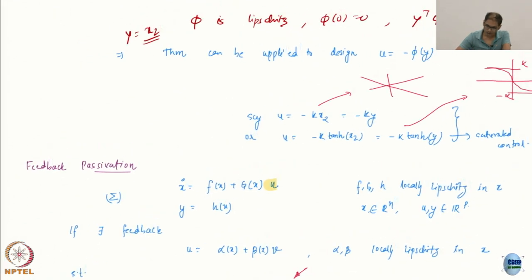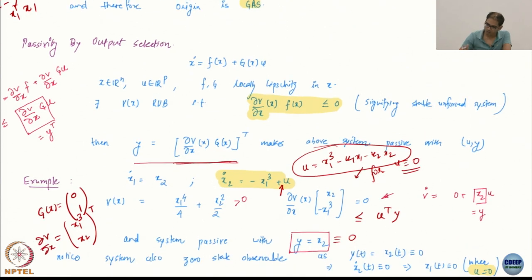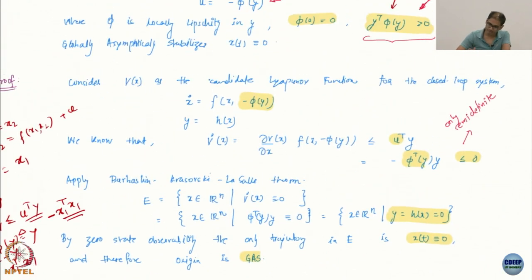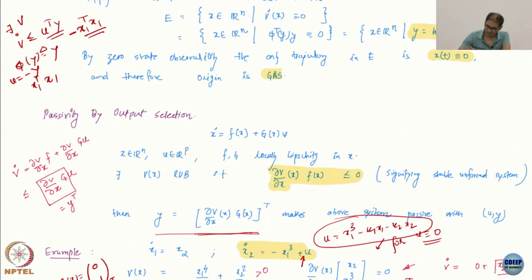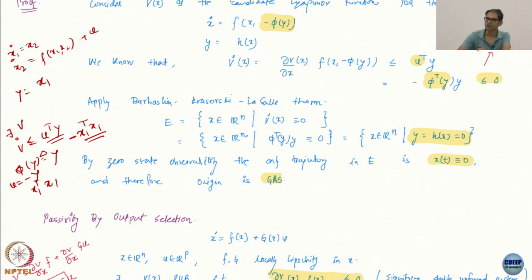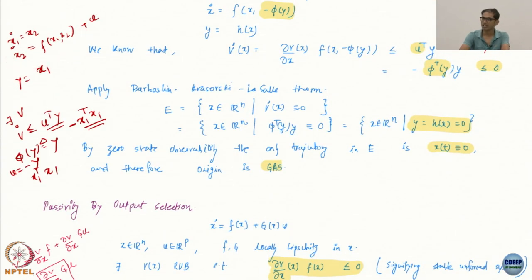In summary, if you have the ability to choose an output that makes the system passive and zero-state observable, you can directly apply this stabilization result. For a more general control-affine system, you need to verify whether the drift f(x) gives a stable unforced system. If it does, the same output selection approach applies. If not, you need to figure out how to handle those terms — and that is what we will see in the next technique.